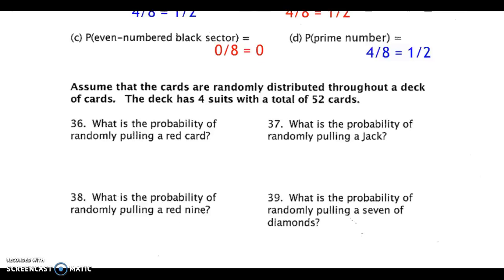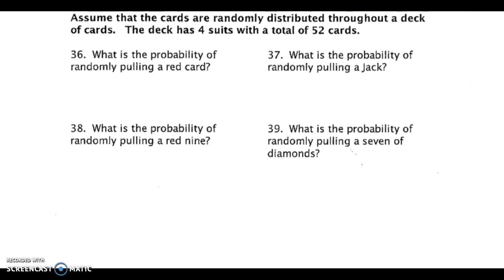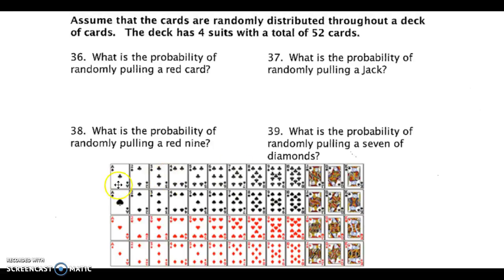For questions 36 through 39, refer to the picture of the cards. It has all 52 cards in the deck, from ace to king, in 4 different suits: clubs, spades, hearts, and diamonds. The hearts and diamonds are referred to as red cards, whereas the clubs and spades are referred to as black cards.